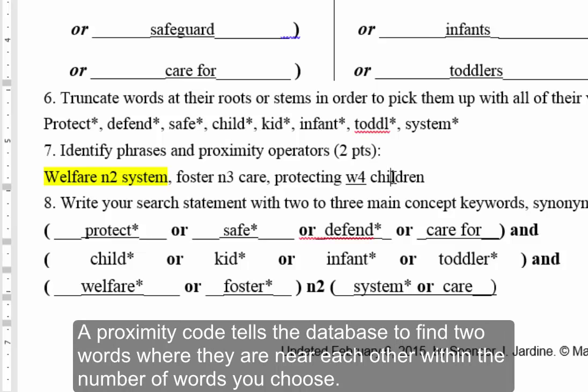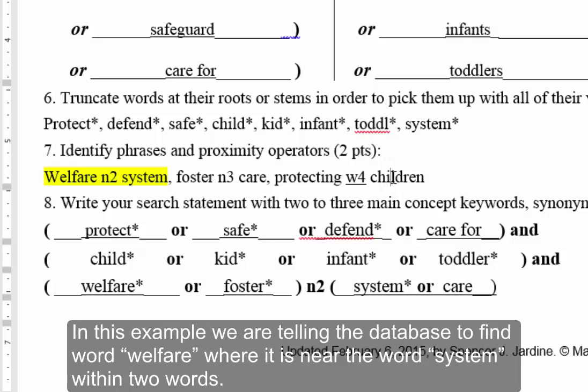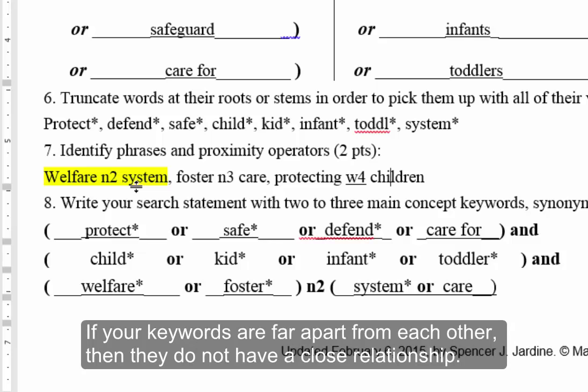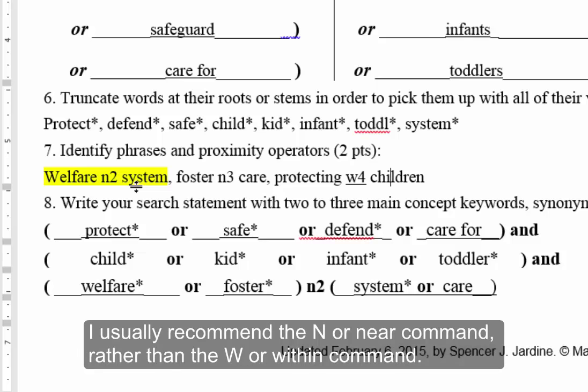A proximity code tells the database to find two words where they are near each other within the number of words you choose. Look at section 7. In this example, we are telling the database to find the word 'welfare' where it is near the word 'system' within two words. When your keywords are near each other, the idea is that your sources are more about those concepts. If your keywords are far apart from each other, then they do not have a close relationship. I usually recommend the IN or NEAR command rather than the W or WITHIN command.